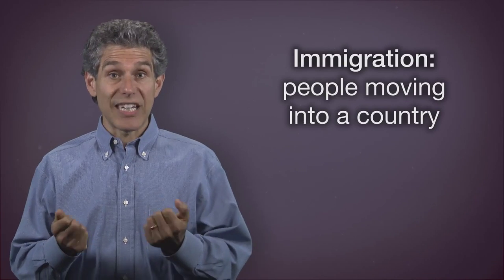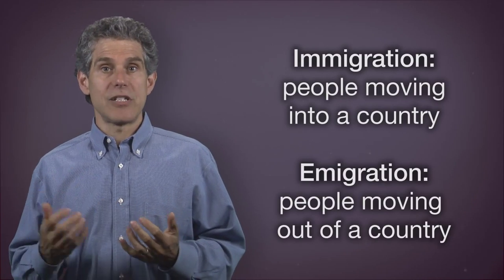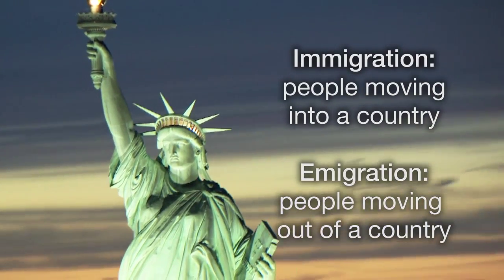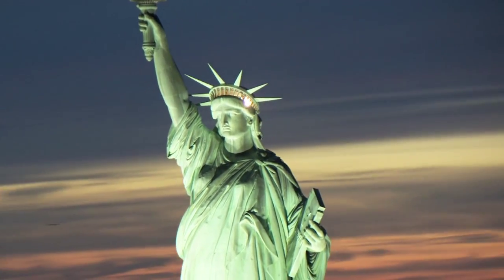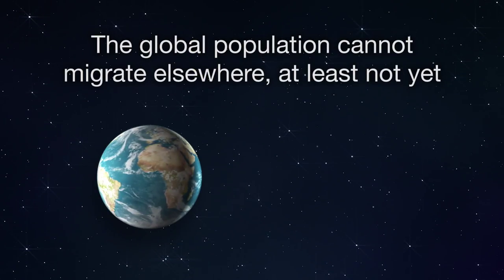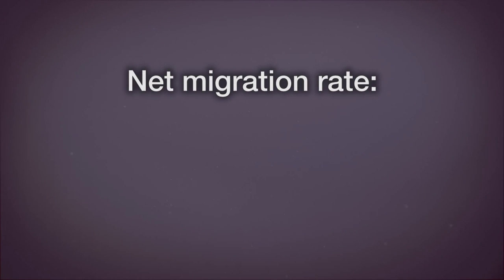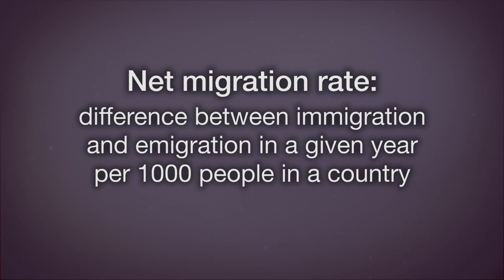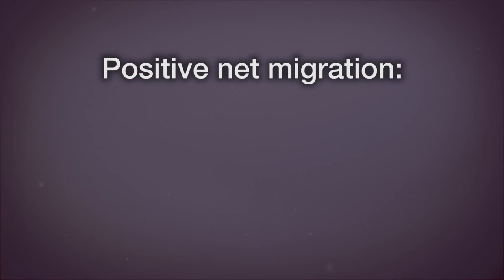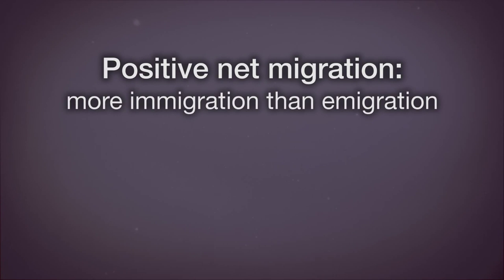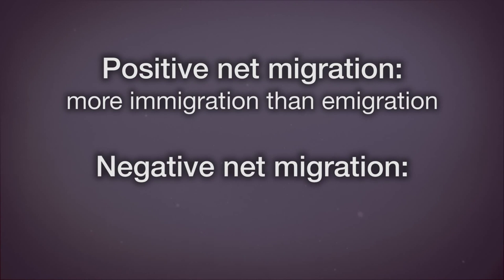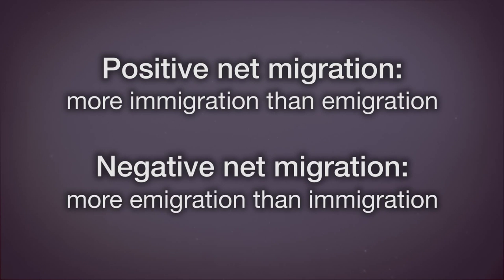Immigration is people moving into a country; emigration is people moving out of a country. Migration is important when talking about specific countries, but when talking about the global population, migration doesn't matter. The net migration rate is the difference between immigration and emigration in a given year per 1,000 people in a country. Positive net migration means more immigration than emigration; negative net migration means more emigration than immigration.